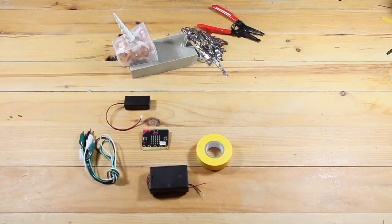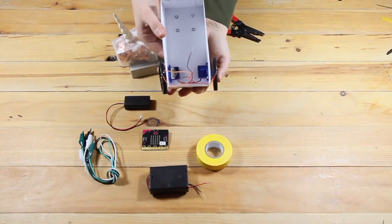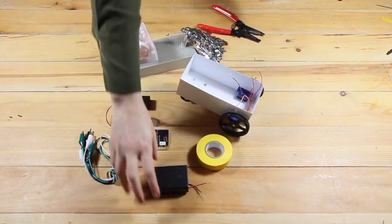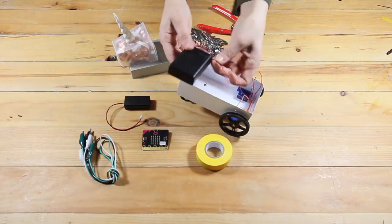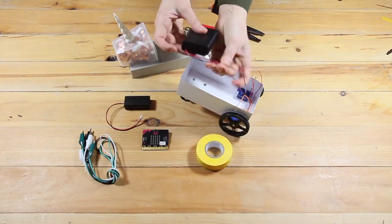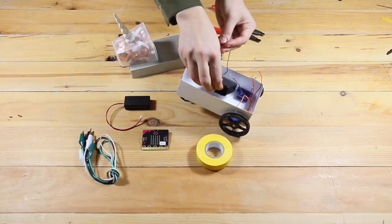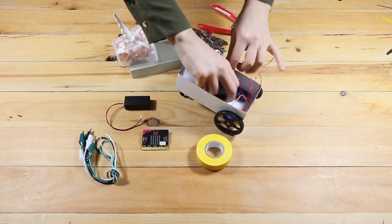Once you've separated and stripped each of the six servo wires, it's time to add in the battery pack. Make sure there are no batteries in the pack before you put it in. You should never work with electricity when it's live.